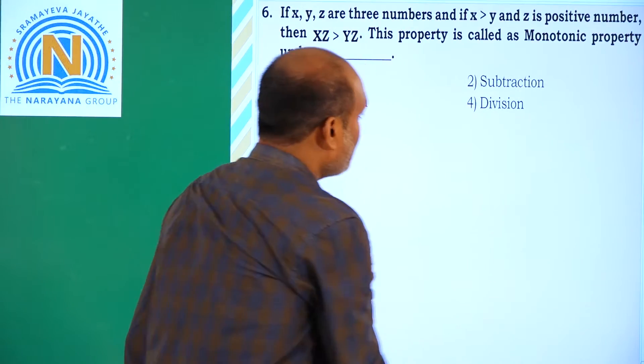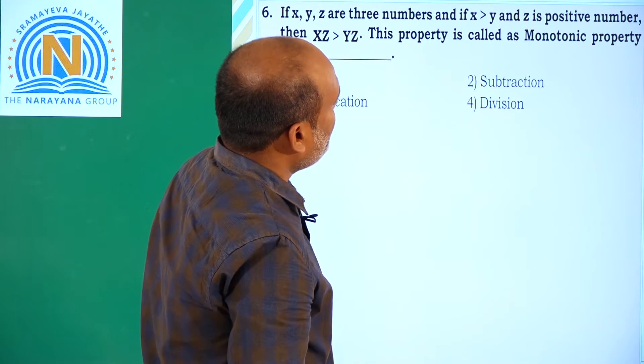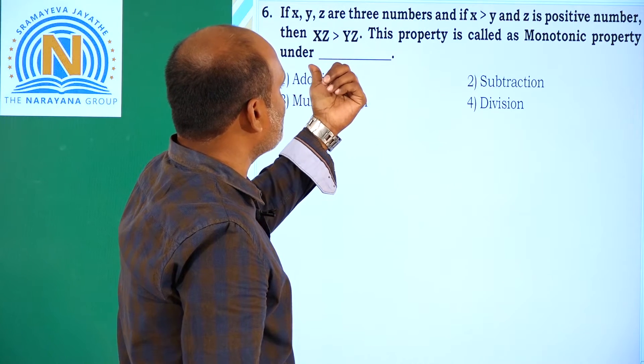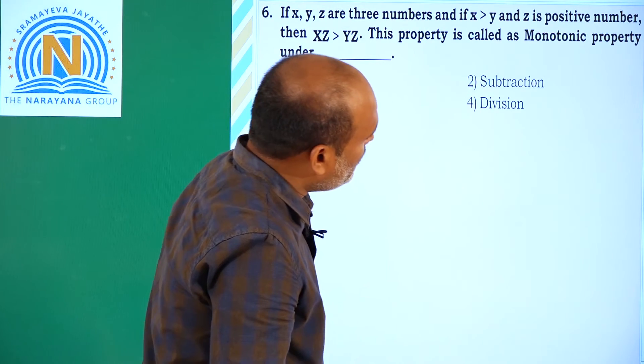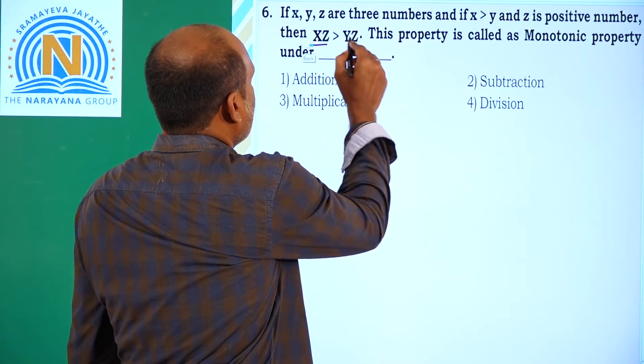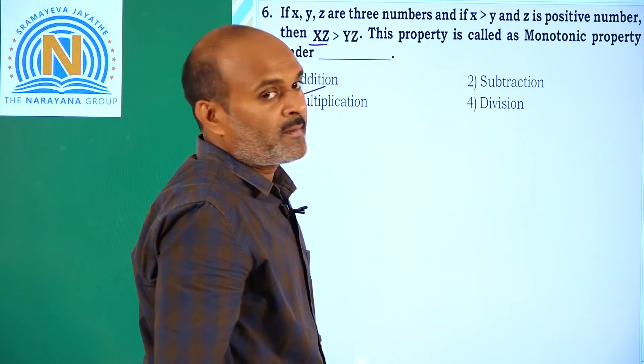Now, coming to the next one. If x, y, z are three numbers, and if x greater than y and z is a positive number, then x into z greater than y into z. This property is called monotonic property under multiplication. Right?